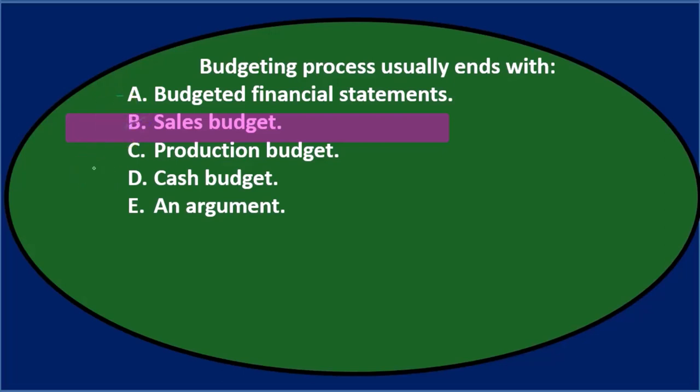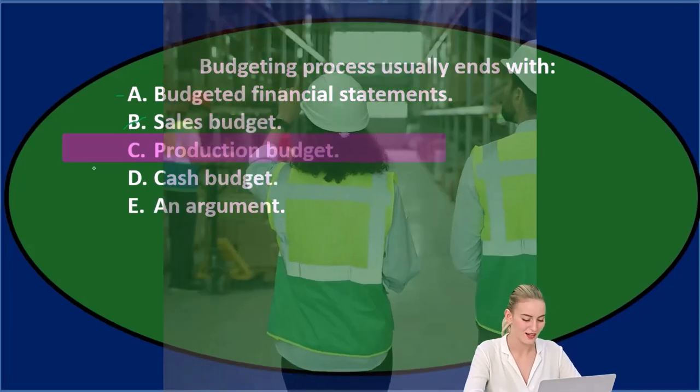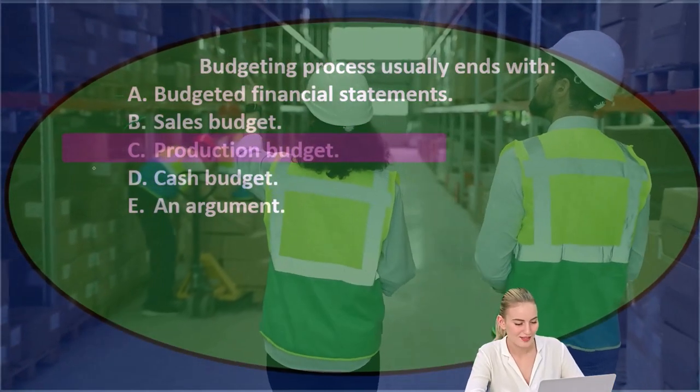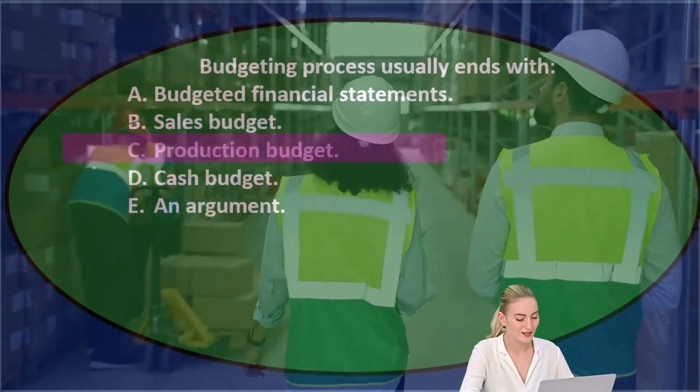C says the production budget, and you're going to need that somewhere towards the upper-middle end type of area. You need the production budget to know how much you're going to spend, to know how much for your cash flow budget and whatnot. So I don't think that's it.